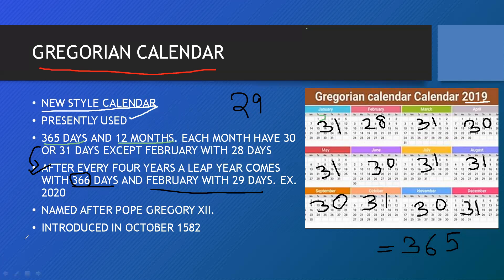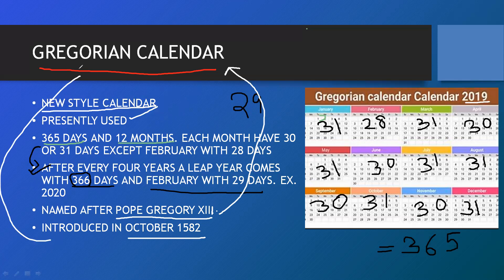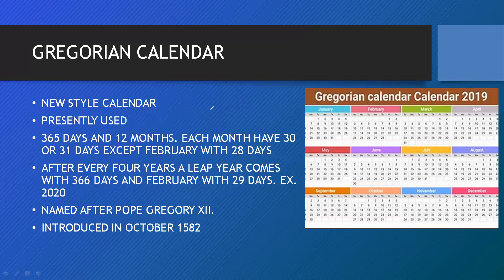From where does the Gregorian calendar derive its name? The Gregorian calendar derives its name from Pope Gregory XIII. In October 1582, he introduced this Gregorian calendar. So this is all about the Gregorian calendar.